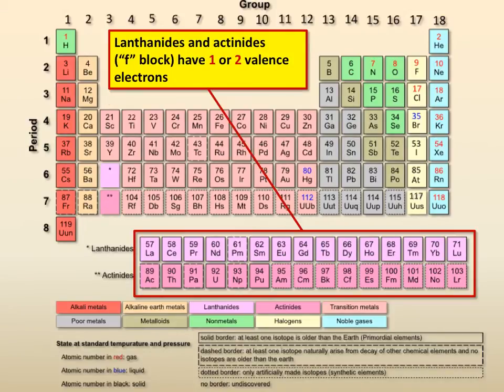Same thing, lanthanides and actinides. Technically they match the transition metals as far as their number of valence electrons, and also can have multiple ion options.